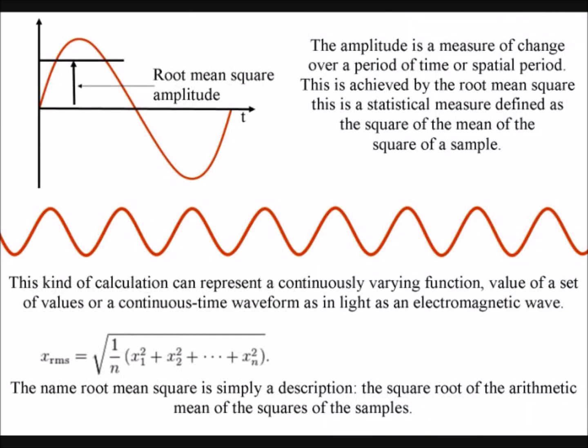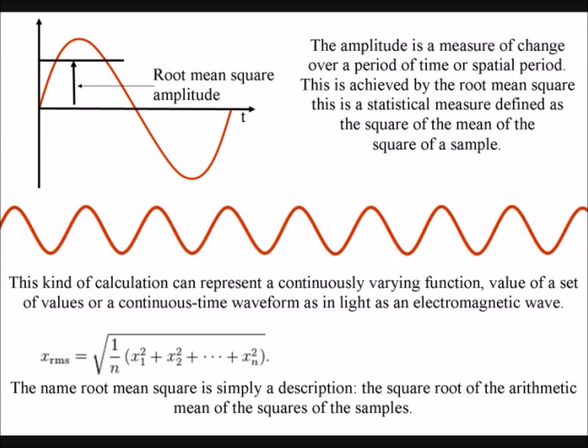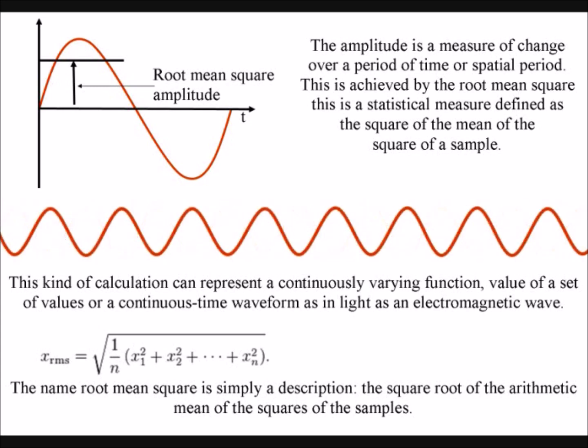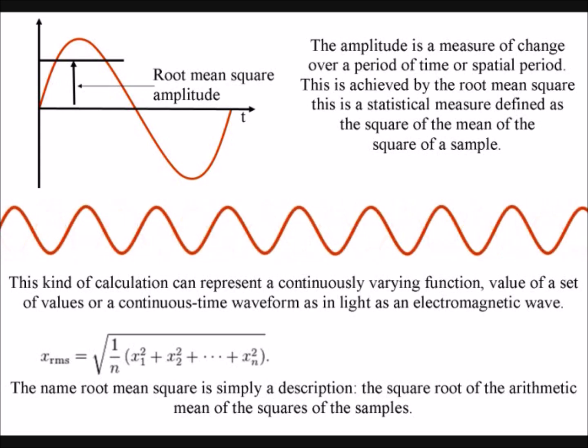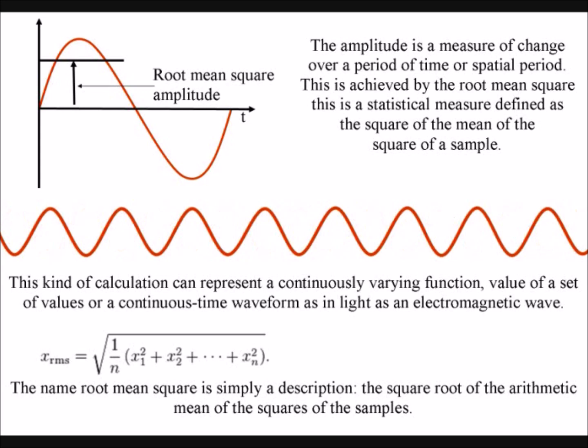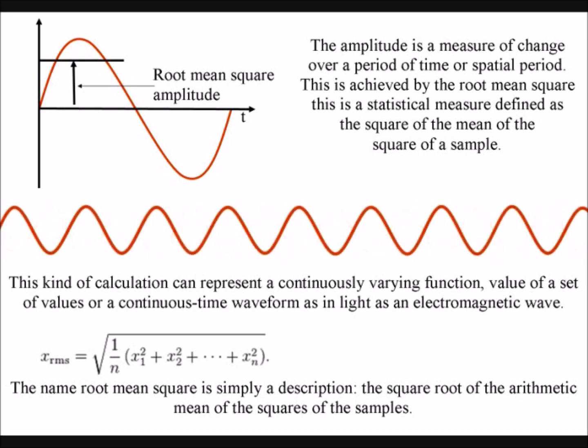But first, if we see why we square the amplitude in classical physics, it will make it easier to understand. The amplitude is a measure of change over a period of time or spatial period. This is achieved by the root mean square, a statistical measure defined as the square of the mean of the square of a sample.